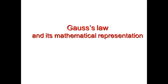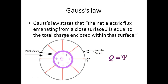Hello viewers. This lecture video explains Gauss law and its mathematical representation. Let us consider a point charge q placed as shown in the figure, and a closed surface or a Gaussian surface is constructed around the point charge distribution. As an example, let us assume there are 8 positive charges within a point charge.